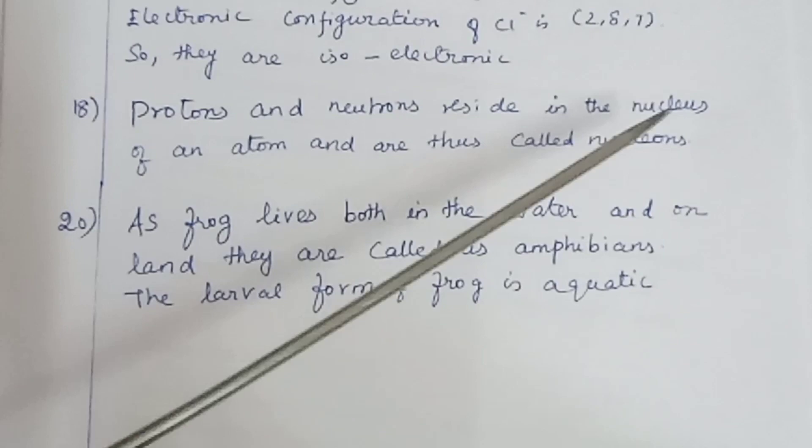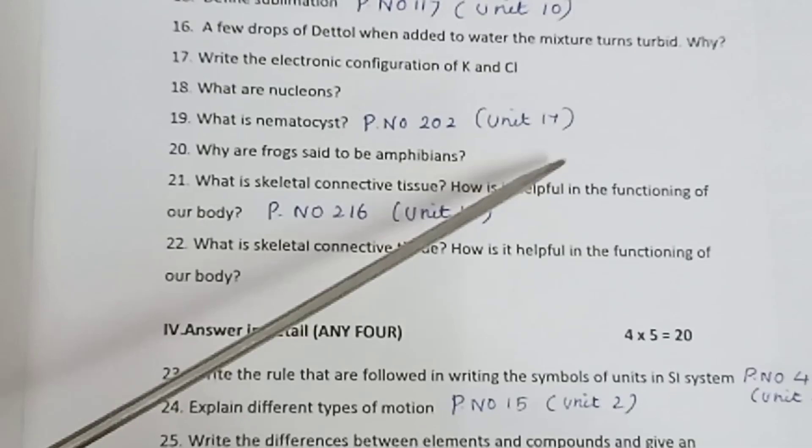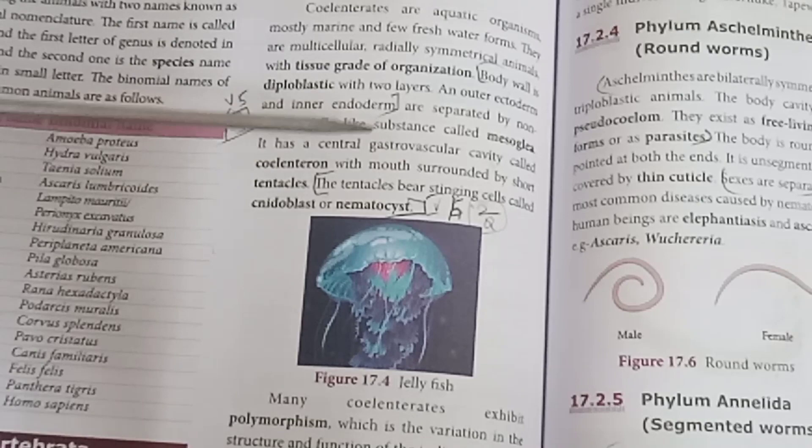Question 18: What are nucleons? Protons and neutrons reside in the nucleus of an atom and are thus called nucleons. Question 19: What are nematocysts? Page number 202, Unit 17.